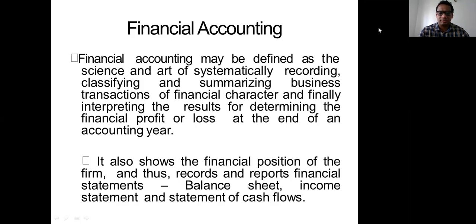Financial accounting basically shows what has happened in the past — the financial profit or loss. It also shows the financial position of the firm through reports such as the balance sheet, income statement, and statement of cash flow. Financial position is different from financial performance: financial performance refers to how the company performed during the past period, while financial position refers to the values of assets, liabilities and capital at the end of a particular day.